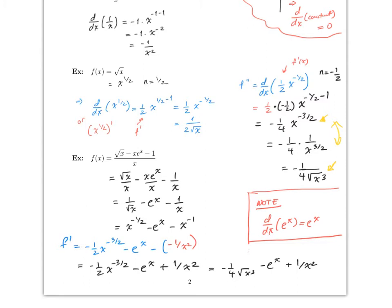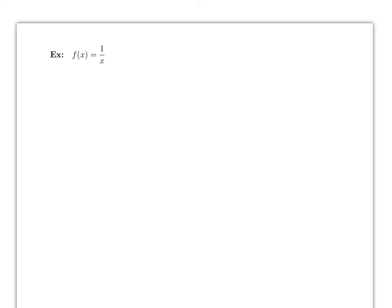Just pause the video and check each of them before you continue to the next part. Once you are familiar taking derivatives, one of the things that will be very useful at the end of calculus 1 and specifically in calculus 2 is to find a formula for the nth derivative. So we want the nth derivative. Remember that f(x) equals 1 over x, and the derivative is much better written as x to the negative 1. You can think of this as the zeroth derivative.